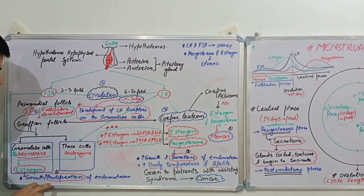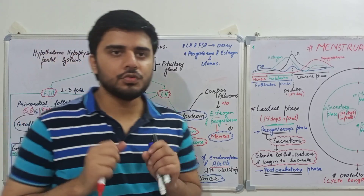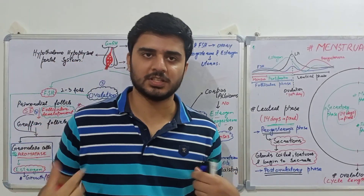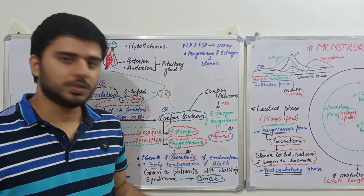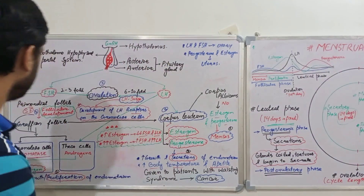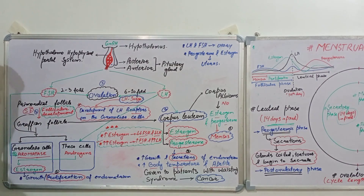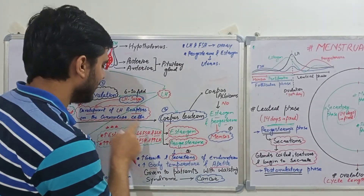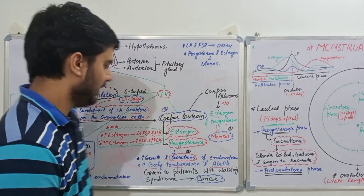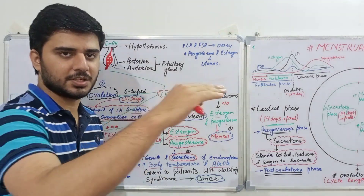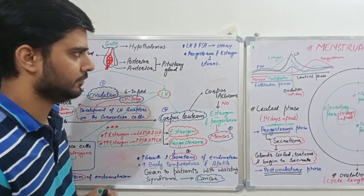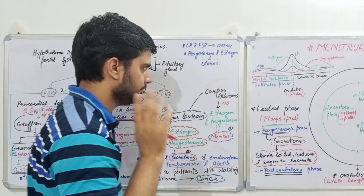Once estrogen is formed, it causes growth or proliferation of the endometrium. Estrogen's major function is causing growth — in the breast it causes breast development, and in the uterus it causes proliferation of the endometrial lining. Importantly, increasing levels of estrogen will cause a decrease in the levels of both follicle-stimulating hormone and luteinizing hormone. This is normal negative feedback — whenever estrogen starts to increase, it inhibits the formation of FSH and LH.